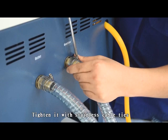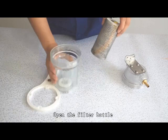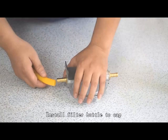When processing aluminum, plastic, or materials with solid floating debris on cutting fluid surface, a filter set is required. Open the filter bottle and take out accessories from the filter element. Install filter bottle to cap.